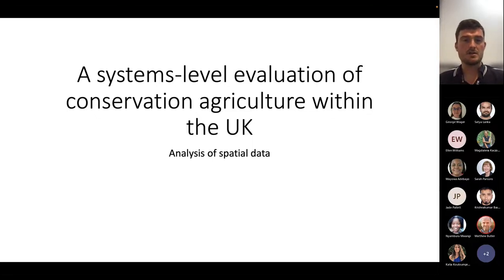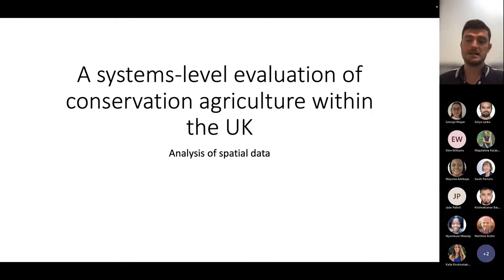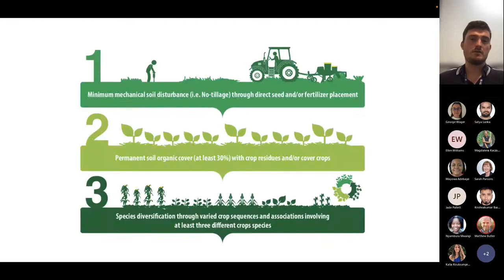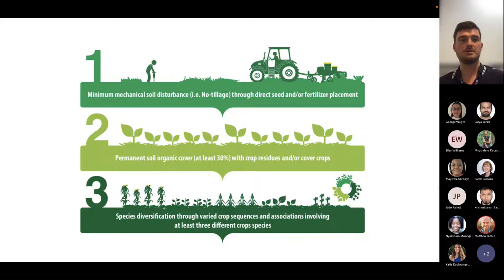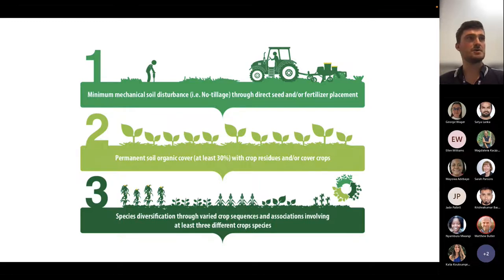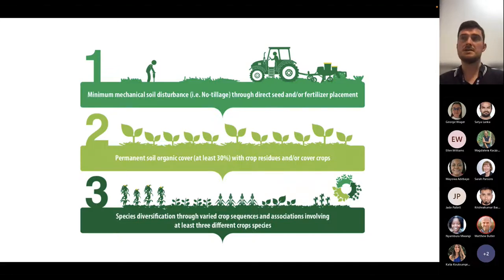Before we do that I'm going to give you a quick overview about my PhD and what the aims are. The title is 'A Systems Level Evaluation of Conservation Agriculture within the UK.' For those who don't know what conservation agriculture is, it's a farming system predicated on three management principles: minimum soil disturbance - which is zero tillage or direct drilling - permanent soil organic cover with crop residues or cover crops, and a species diversification of the crop rotation. So it's many variables and it's a whole farming system.